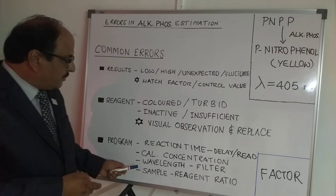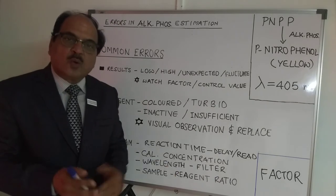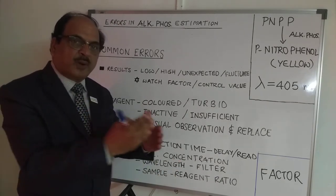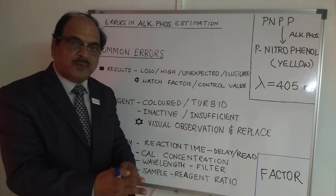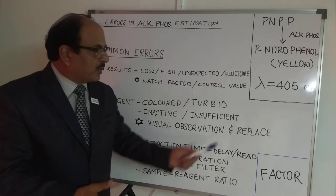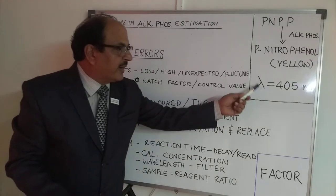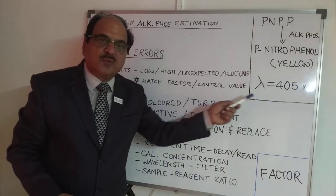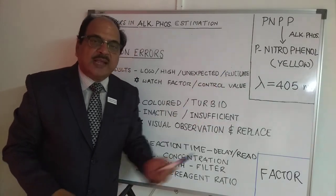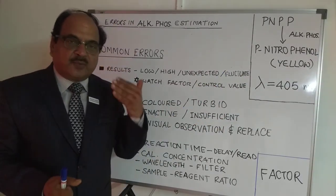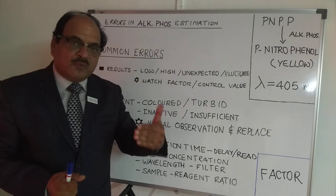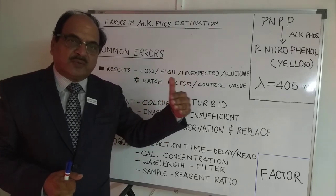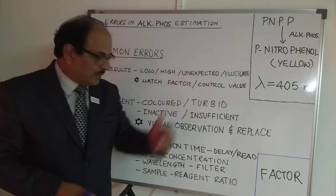Next is wavelength. Commonly, when you copy one program to a second program during programming, you tend to forget to change the wavelength to 405 nanometers. Ensure that your program has a 405 nanometer wavelength set correctly.